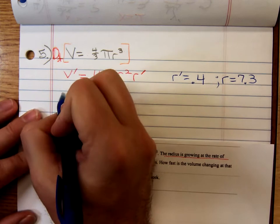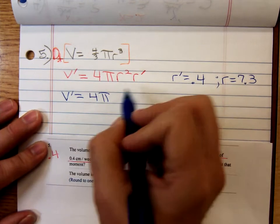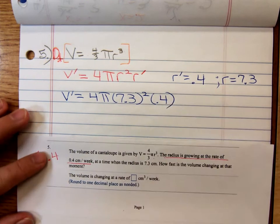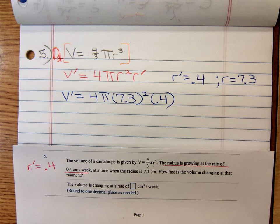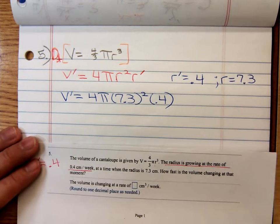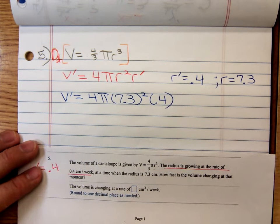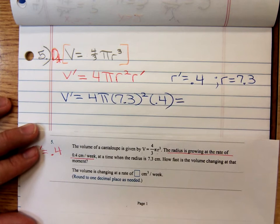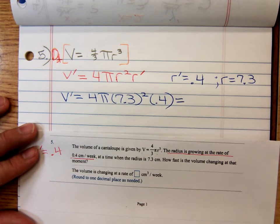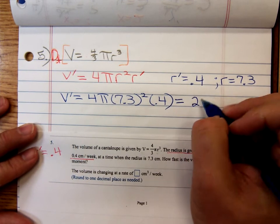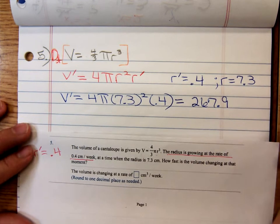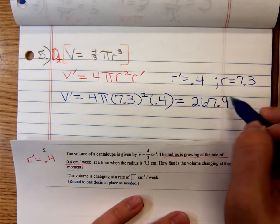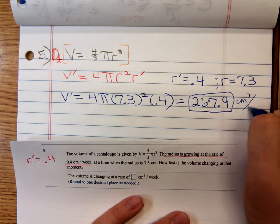So substitute in, there's v prime, 4 pi, r is 7.3, and r prime is a 0.4. Okay, so by the way, you'll notice the instructions say round to one decimal place. So punching all of that into your calculator, we're going to get 267.9, that's a positive 267.9. That would be cubic centimeters a week. So at that point, the volume of that cantaloupe, it's growing because that's positive and it's growing at a rate of 267.9 cubic centimeters per week.